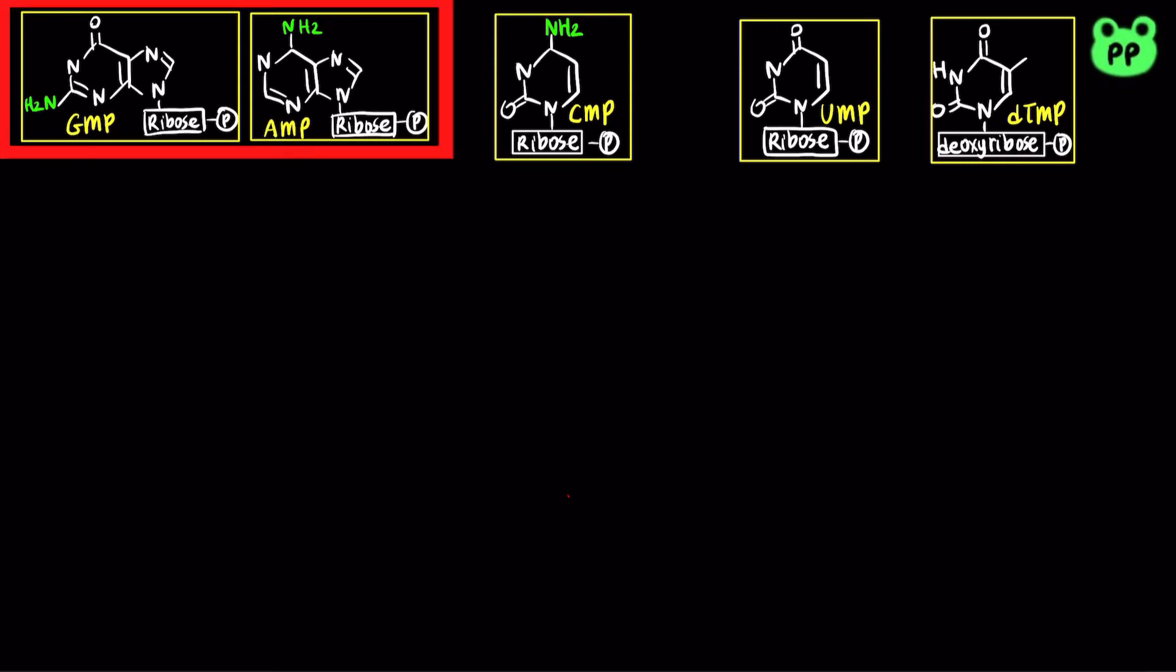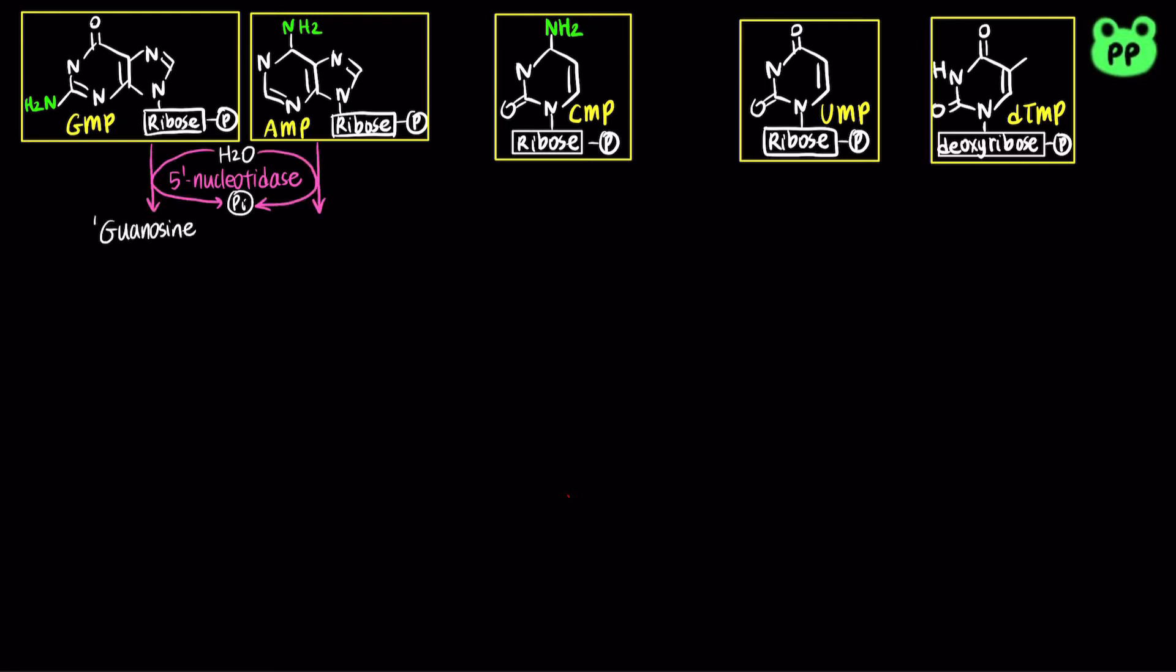Purine nucleotides, including guanylate or GMP and adenylate or AMP, are first degraded by 5' nucleotidase, which hydrolyzes the phosphate groups, producing their respective nucleosides guanosine and adenosine.